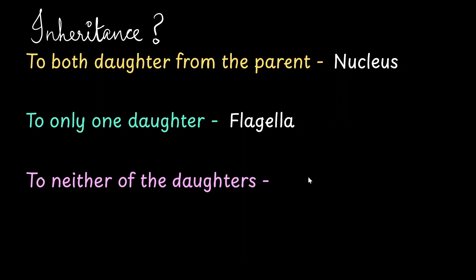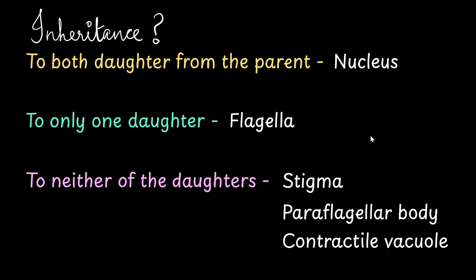Finally, some organelles go to neither of the daughter cells — for example, the stigma, the paraflagellar body, and the contractile vacuole. These organelles break down during the process of cell division and have to be created new in both daughter cells.